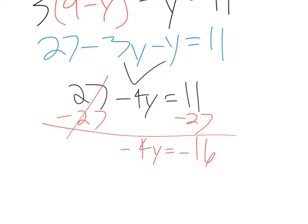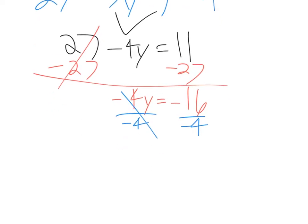And then get rid of any whole number by letter by dividing. Negative four y means negative four times y, so the opposite of that would be divide. So negative 16 divided by negative four is positive four. So y equals positive four. So we found our first answer.